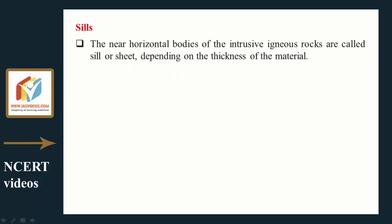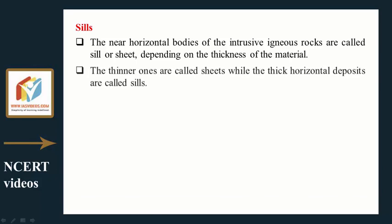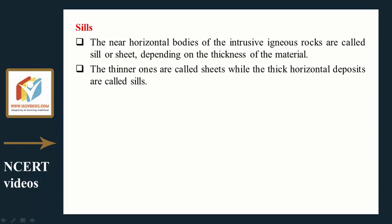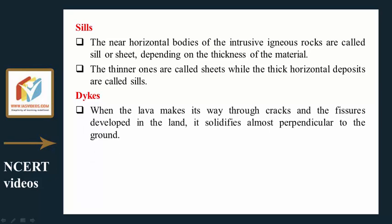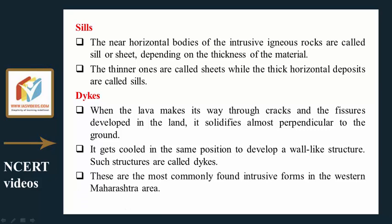Sills and Dikes: Near-horizontal bodies of intrusive igneous rocks are called sills or sheets depending on thickness — thinner ones are called sheets while thick horizontal deposits are called sills. When lava makes its way through cracks and fissures and solidifies almost perpendicular to the ground, it develops a wall-like structure called a dike. Dikes are the most commonly found intrusive forms in the western Maharashtra area.